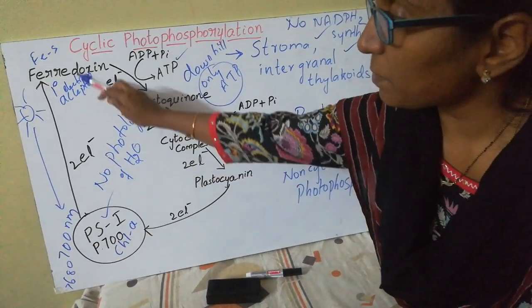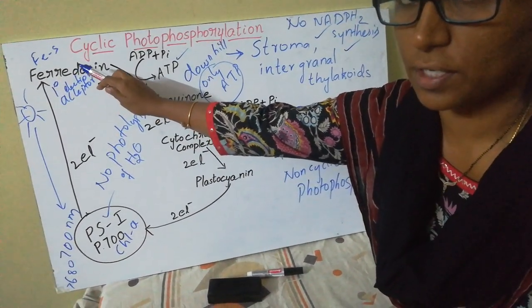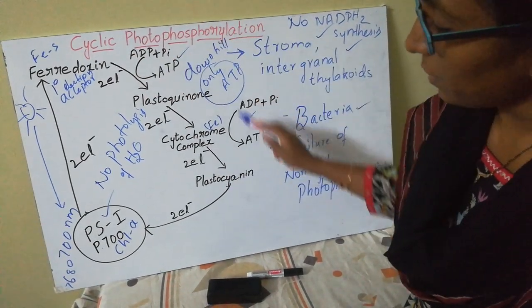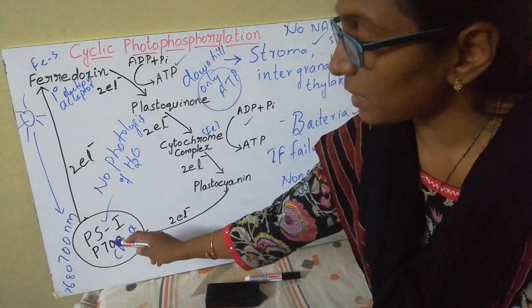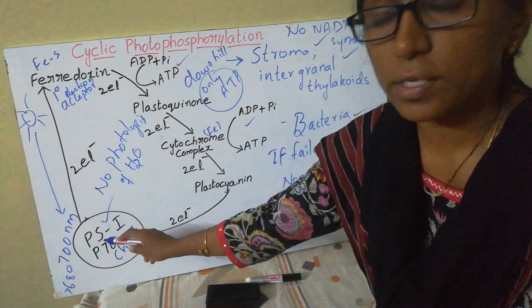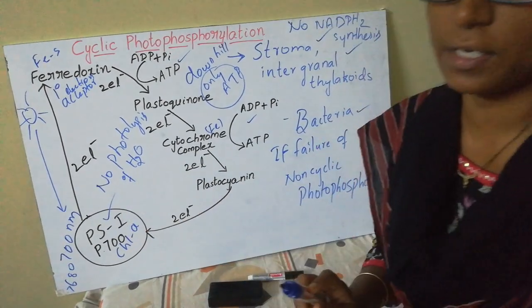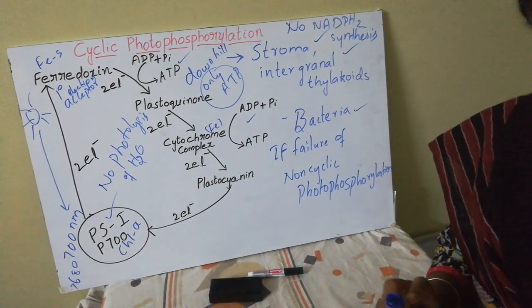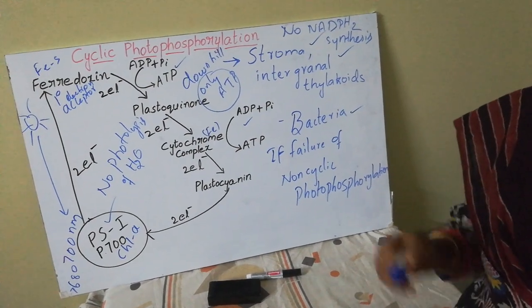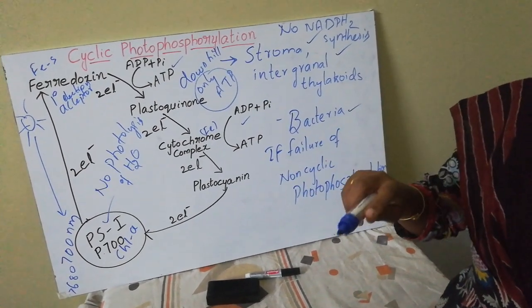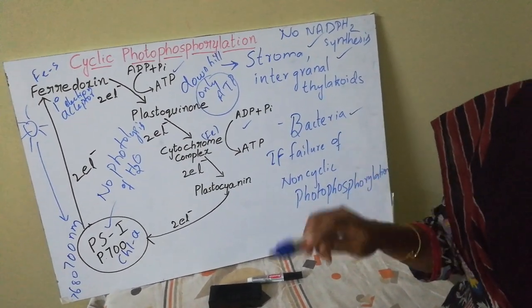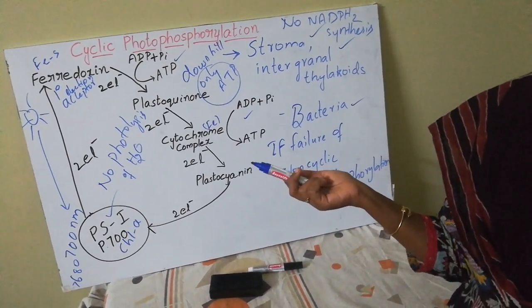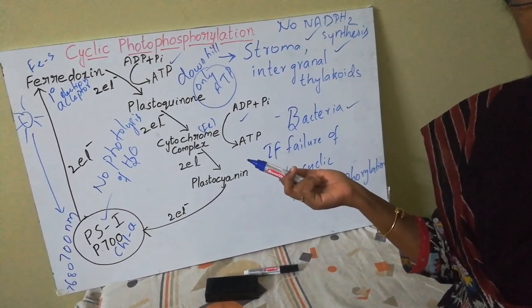The primary electron acceptor for Photosystem 1 is ferredoxin, and the last electron carrier, plastocyanin, sends the electrons back to the same reaction center. This is about cyclic photophosphorylation. In the next session we will see the differences between cyclic and non-cyclic photophosphorylation. Thank you.